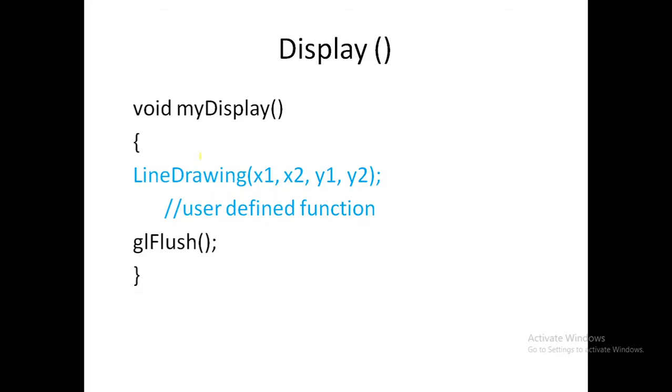The third function in every program is display. This function is called from main using glutDisplayFunc. You can write your line drawing logic in a separate function here. The last line of display will be glFlush, which takes your output to the display, flushing output from your frame buffer to display.